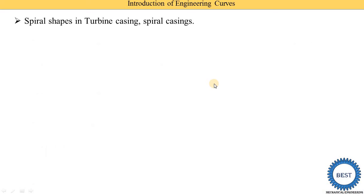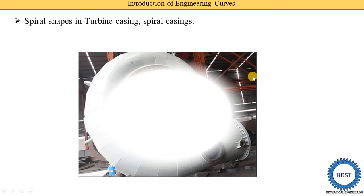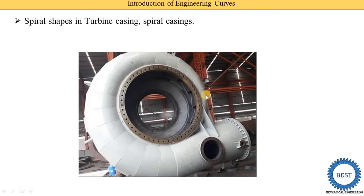Another application is the spiral shape in turbine casing, also called a spiral casing. Here you can see this is the image of a turbine, and this outer part is called a casing. This shape is the spiral shape, so it is called a spiral casing. In engineering curves, we also understand how to draw spirals.